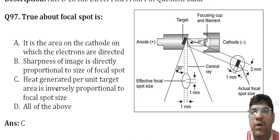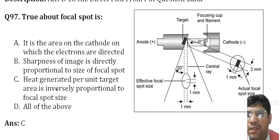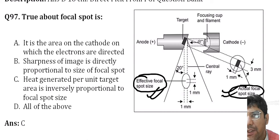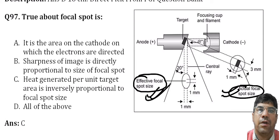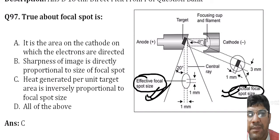The true statement about focal spot is that the heat generated per unit target length is inversely proportional to the focal spot. The effective focal spot and the actual focal spot are distinct regions. More information on the focal spot has been discussed in the subject-wise lecture.